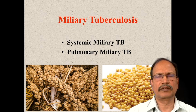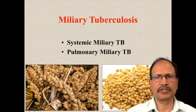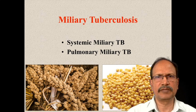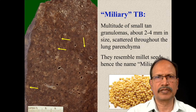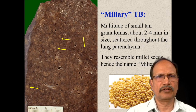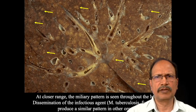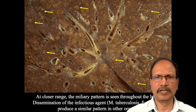Sometimes tuberculosis can spread systemically in a pattern called miliary tuberculosis. This spread is associated with the production of granulomas that are smaller and resemble millet seeds, hence the name miliary tuberculosis. Miliary tuberculosis can be systemic or confined to the pulmonary variety. This slide shows the cut surface of the lung with gray-white nodules of uniform size spread across the lung field, resembling millet seeds. The uniform size indicates that the infection spread at the same time.